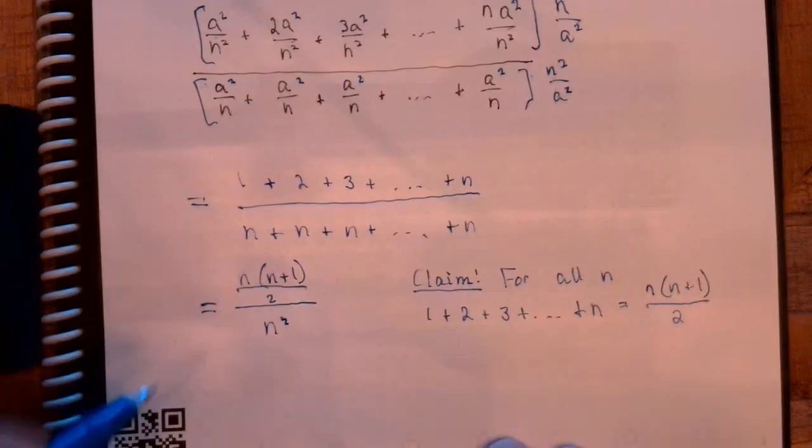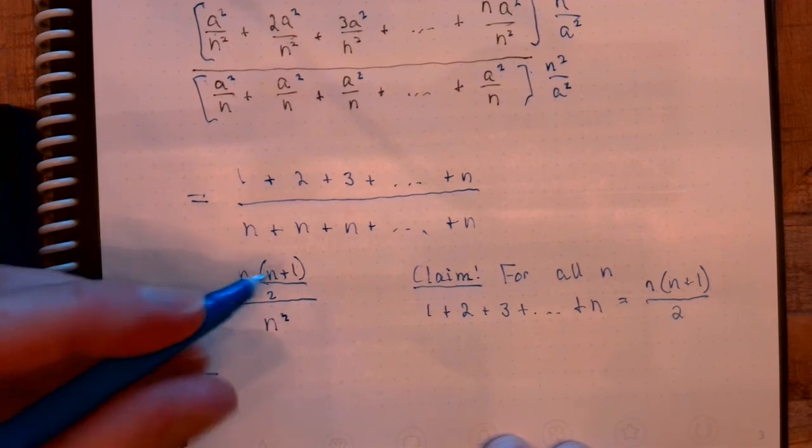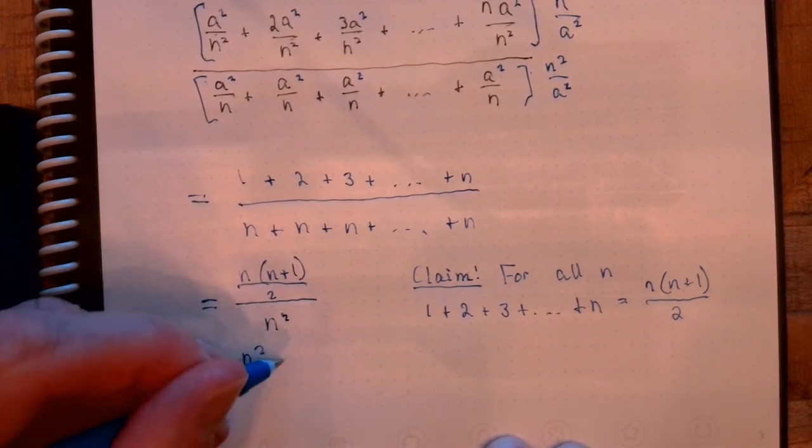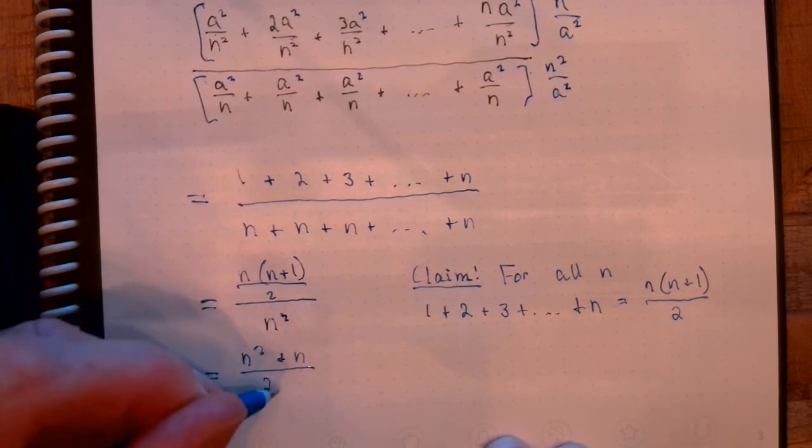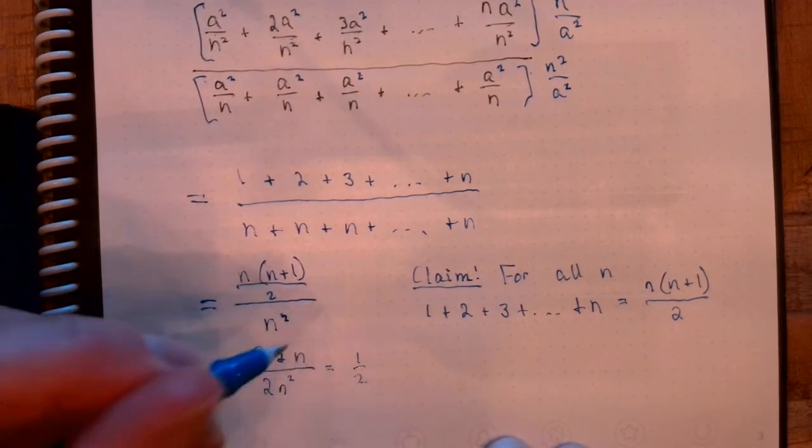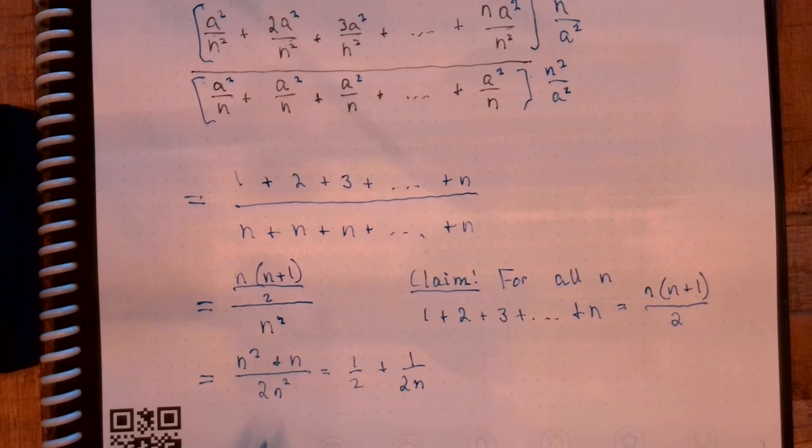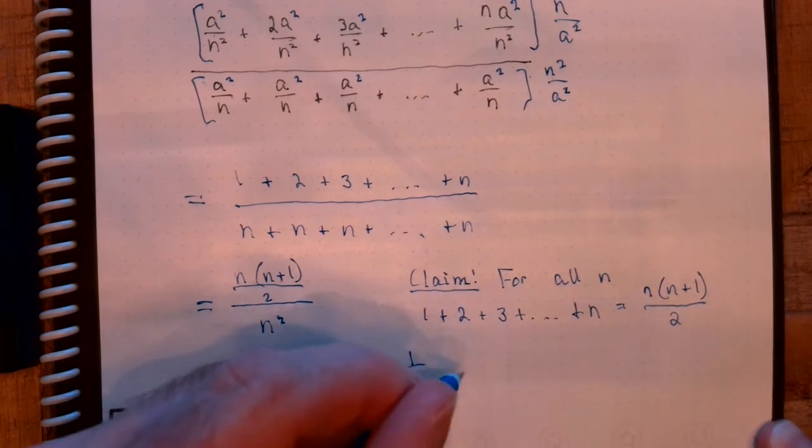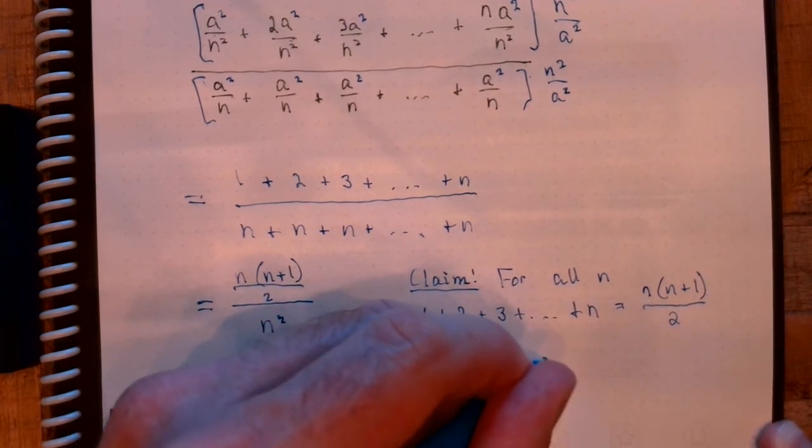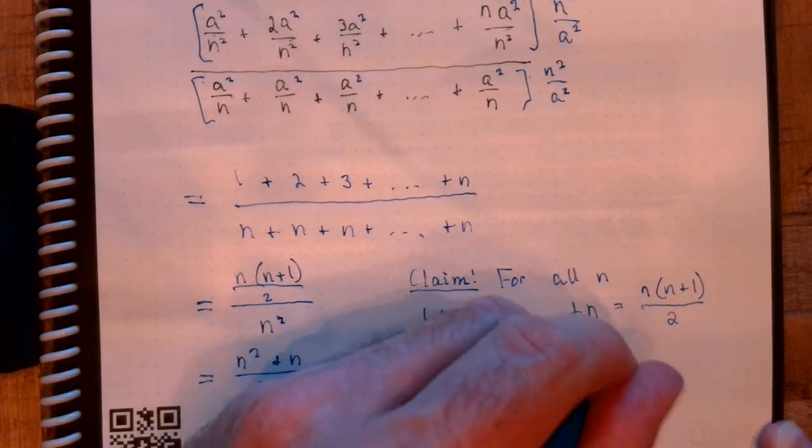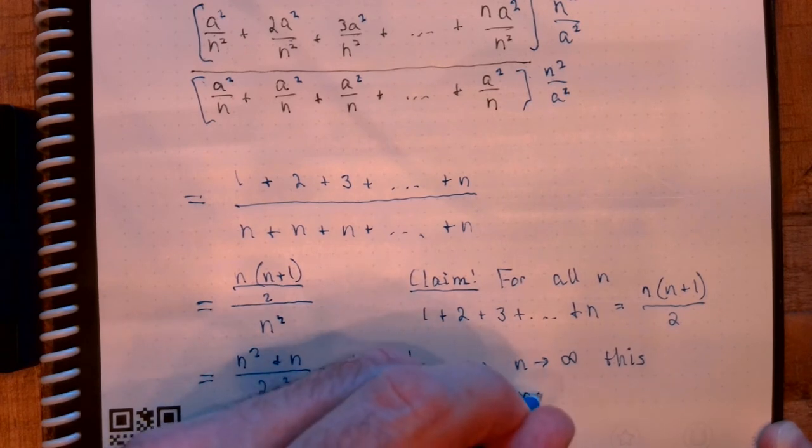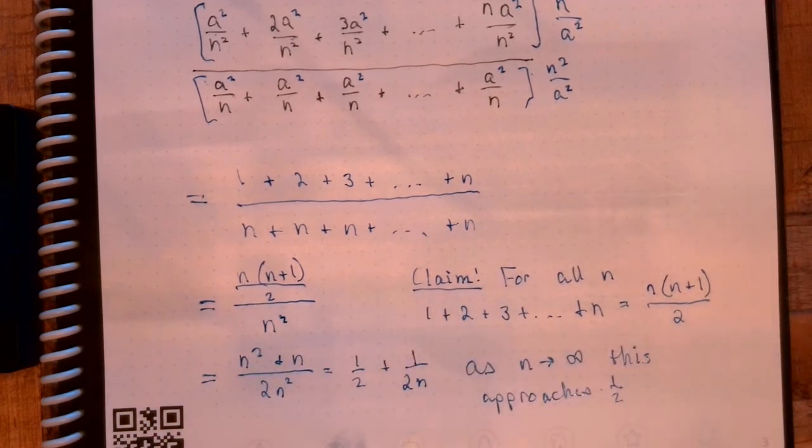Now, this simplifies quite a bit right here. I could rewrite this as such. I just broke the fraction up there. In the first one, the factors of N squared cancel. In the second one, I have an N in the denominator. We can see, as N goes to infinity, this approaches 1 half.